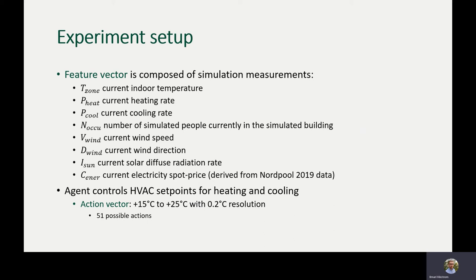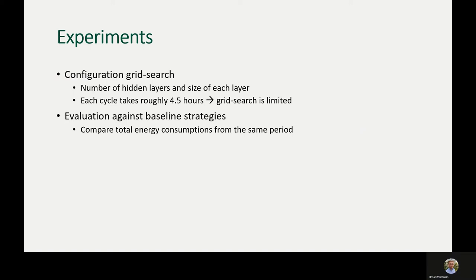The action vector consists of temperature set points for heating and cooling. In this work the agent does not control the power output of the HVAC machinery directly, but rather controls the temperature set points. The temperature range is from plus 15°C to plus 25°C with a 0.2°C resolution, meaning there are 51 different possible actions for each time step.